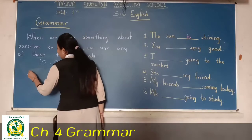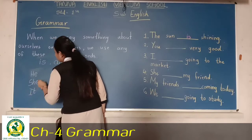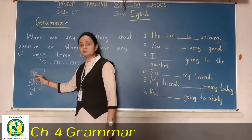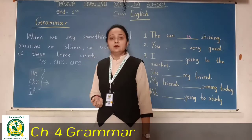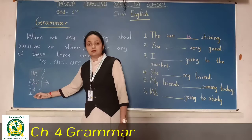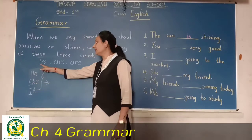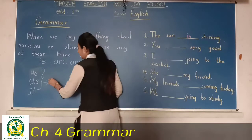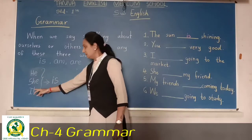So, one more thing — he, she, or it. This you have already learned. He use karte hain boys ke baare mein. Koi boy ke baare mein baat karte ho, 'he' bolenge. Koi girl ke baare mein baat karte ho, 'she' bolenge. And for things and animals, 'it' use karte hain. He, she, or it — we will always use 'is'. He is. She is. It is.